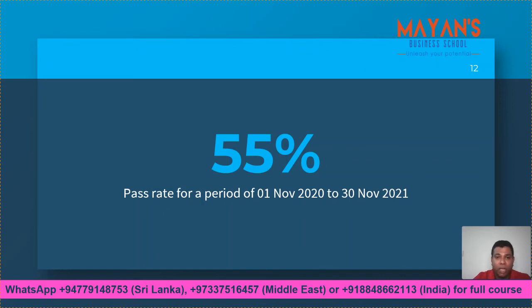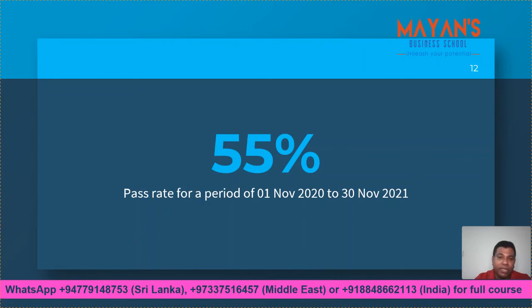Your confirmed results, scale score, and performance against the syllabus content area will be published to your myCIMA account after 48 hours of the exam. The provisional result, more than 90% of the time, gets confirmed later, but it's not 100% certain. Regarding the pass rate: if 100 students sit for the exam, 55 pass and 45 do not. This data was collected from 1st November 2020 to 30th November 2021. E3 has a 72% pass rate, F3 has 55%, and P3 has 52%. With almost half of the people not passing, this indicates the exam is not very easy.